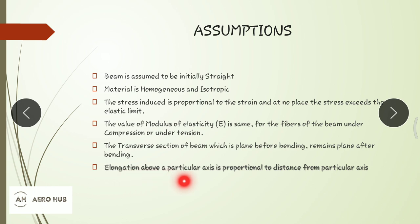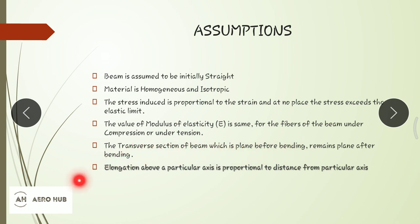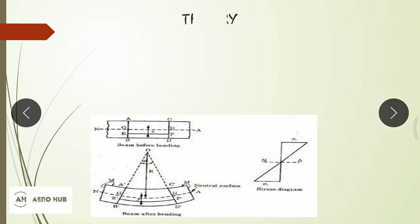The last and most important assumption is that elongation above a particular axis is proportional to the distance from that axis. These assumptions are used for the derivation for both symmetrical and unsymmetrical bending expressions. Now we'll go to the theory — this is the section of the beam before bending.